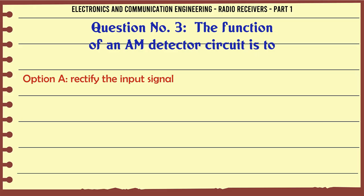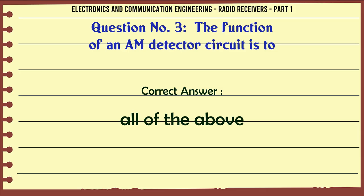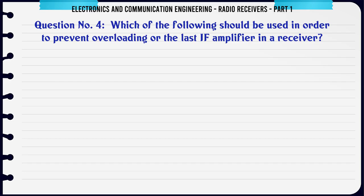The function of an AM detector circuit is to: a. Rectify the input signal. b. Discard the carrier. c. Provide audio signal. d. All of the above. The correct answer is all of the above.